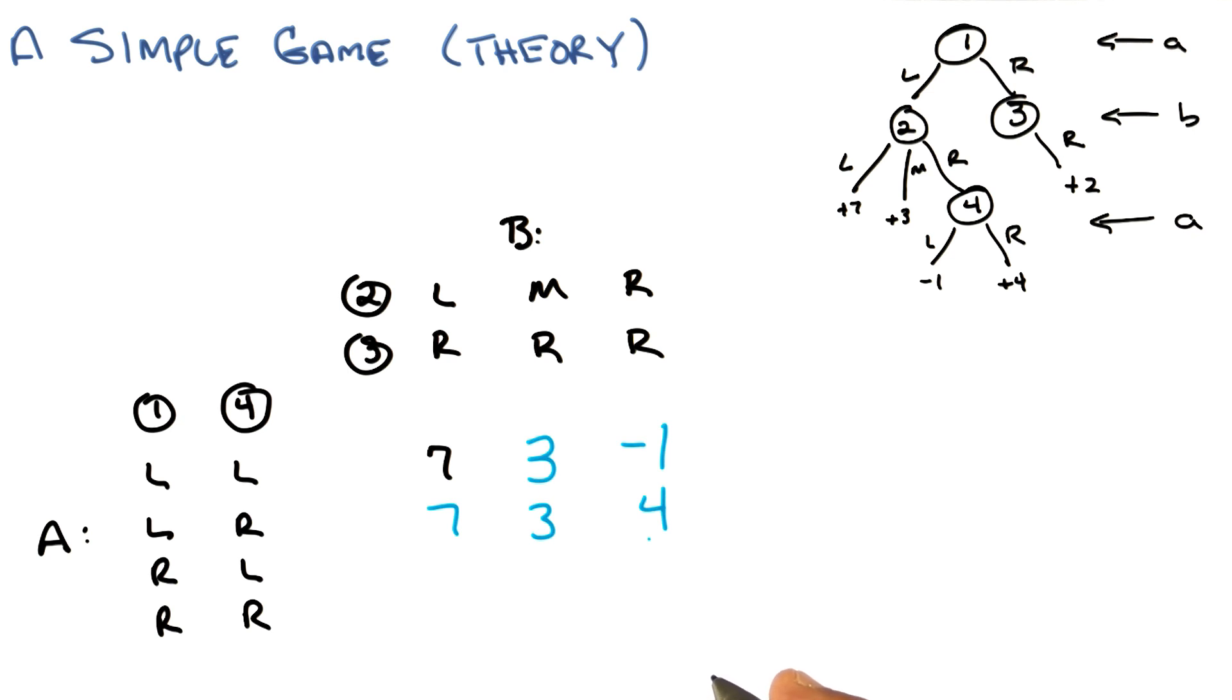So player one goes right, player, or sorry, player A goes right, player B has to go right. There's no choice. So we're going to get twos no matter what now. So it's going to be two, two, two. And the second row will repeat that, two, two, two. Okay.